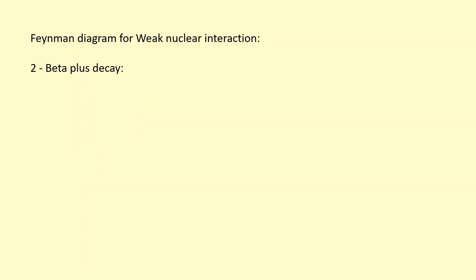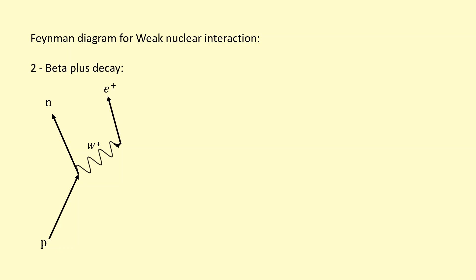In beta-plus decay, the nucleus has too many protons, and the proton is going to turn into a neutron. Charge still needs to be conserved — the proton has a positive charge — so you can think of it as emitting its positiveness through the W-plus boson, another exchange particle for the weak nuclear interaction. That W-plus boson is going to turn into a positron, and in order to conserve lepton number we need an actual lepton because a positron is an antilepton — so we're going to have an electron neutrino.